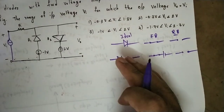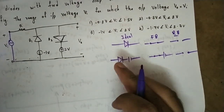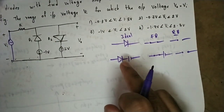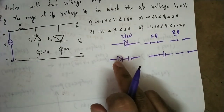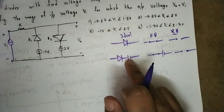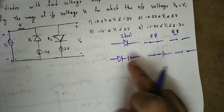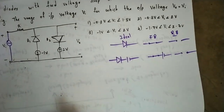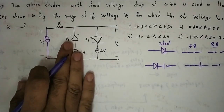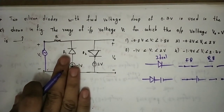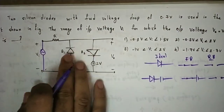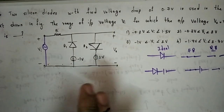The main idea is: if we have a practical diode, we convert it to an ideal diode by adding the cut-in voltage value. Then we redraw the circuit. If we don't have practical diodes, they become ideal diodes.